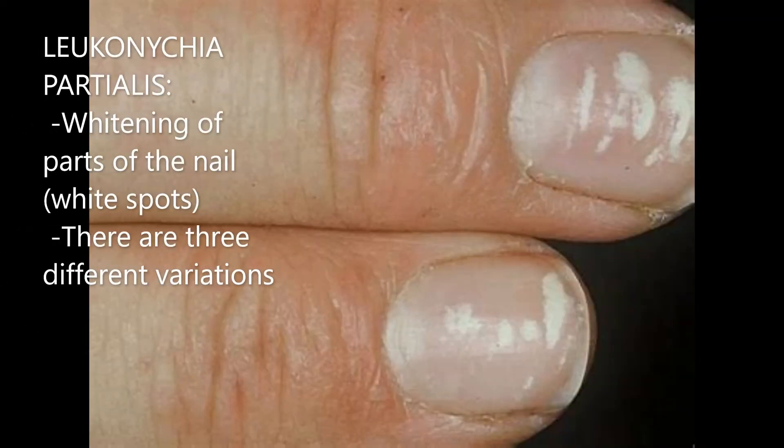Let's move on to the second category, which is leukonychia partialis. As its name suggests, the whitening does not involve the entire nail — it involves only parts of the nail. As we've already mentioned, leukonychia partialis can be divided into three different subtypes.